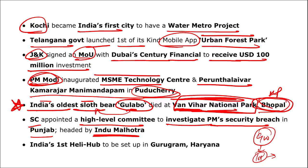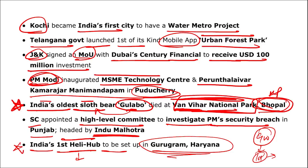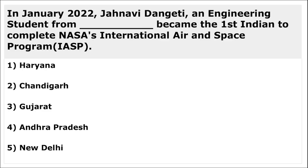India's first heli-hub (for helicopters, like an airport for planes) is to be set up in Gurugram, Haryana. Janvi Dingeti, a 19-year-old engineering student from West Godavari district of Andhra Pradesh, became the first Indian to complete NASA's International Air and Space Programme.